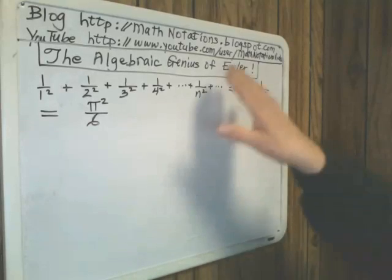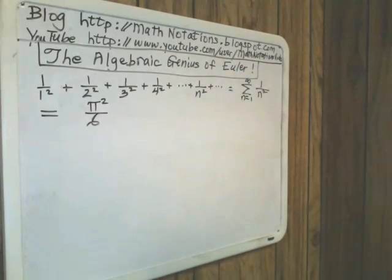I call this the Algebraic Genius of Euler. I may change the name of that in my blog post, but what we're looking at here is a problem